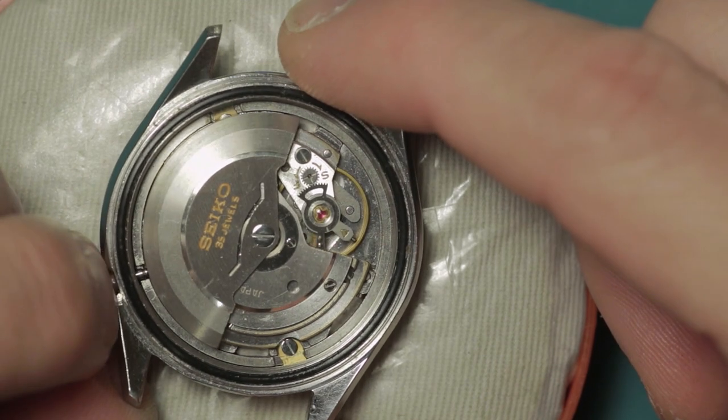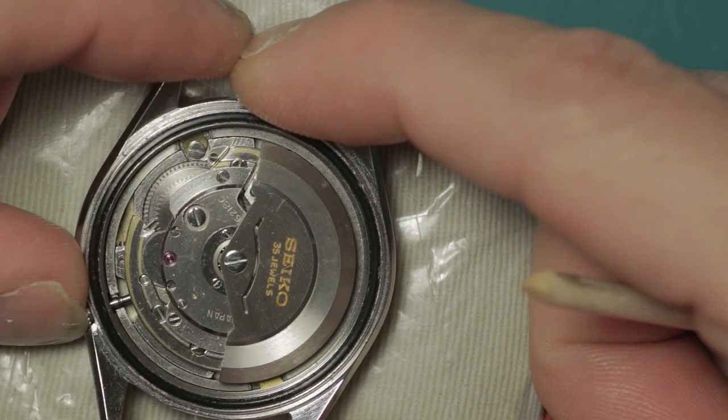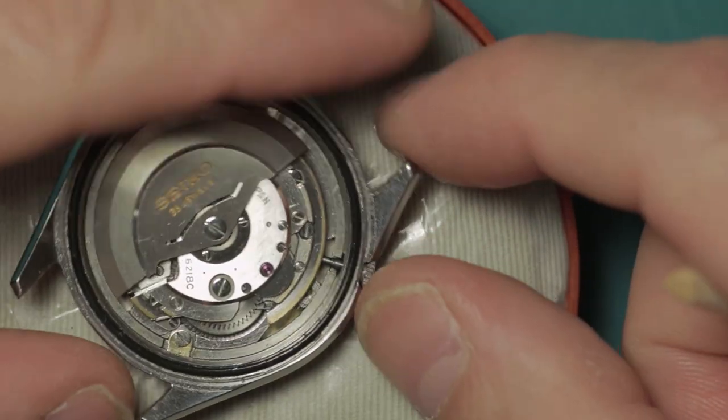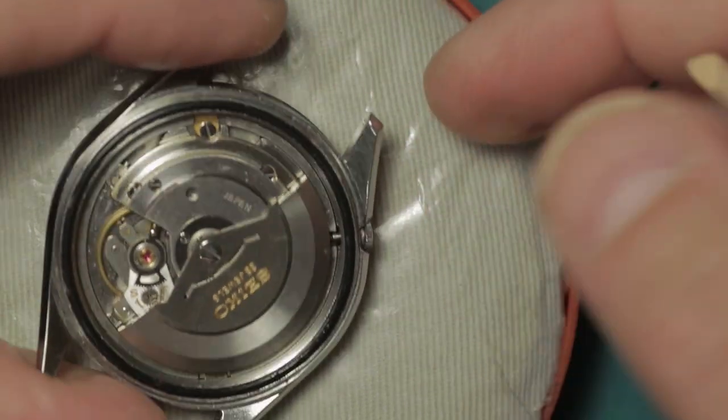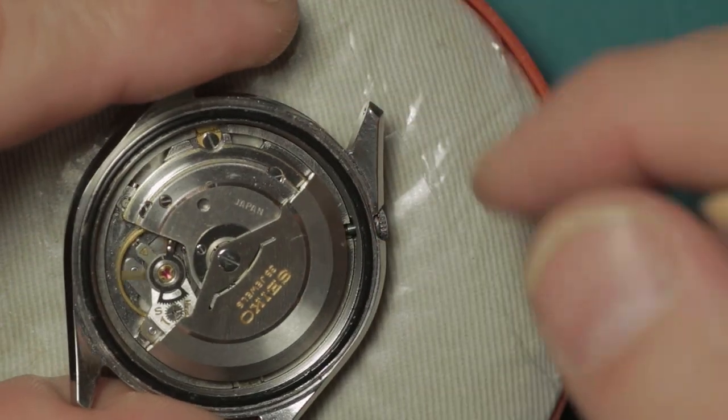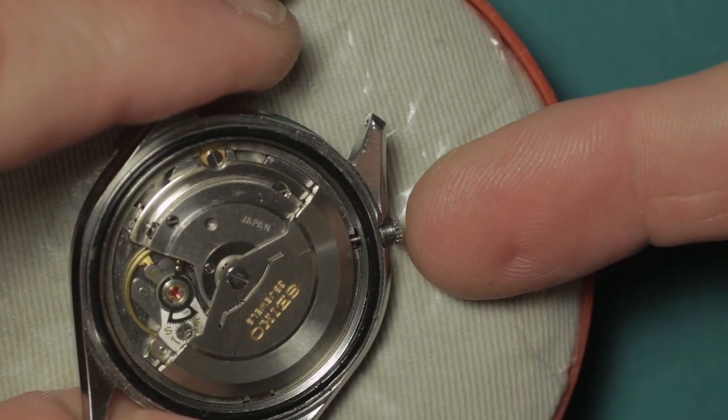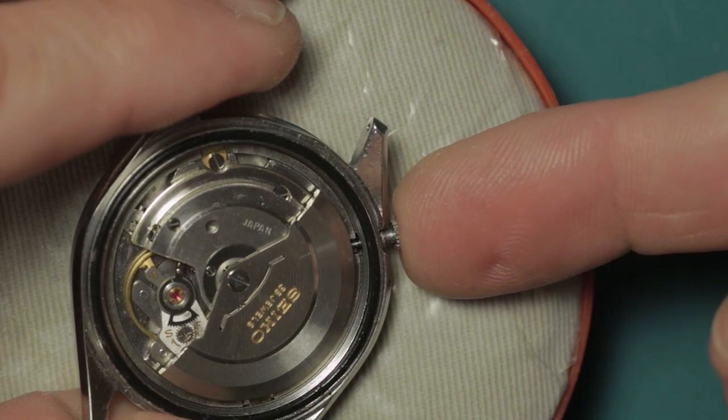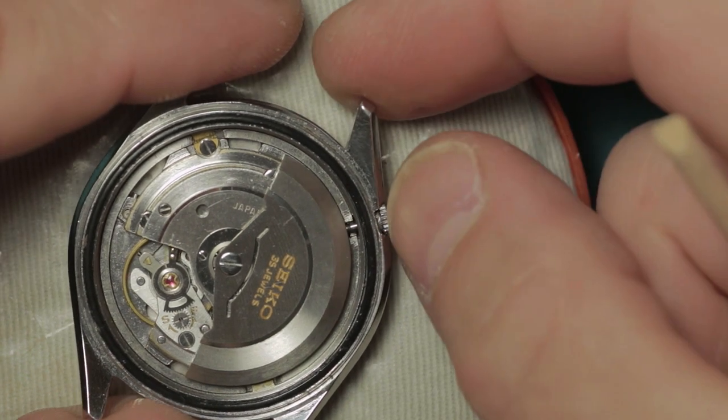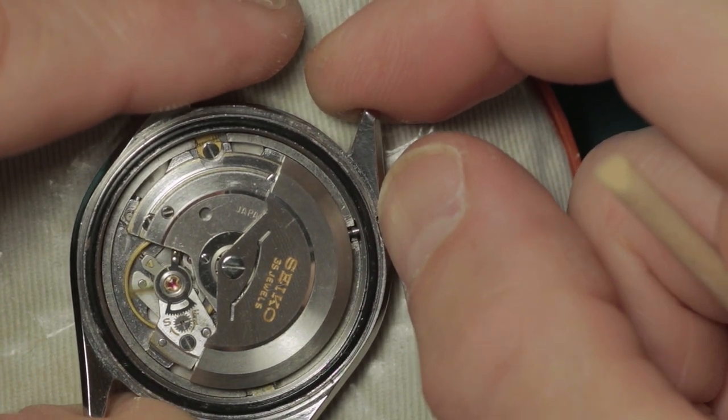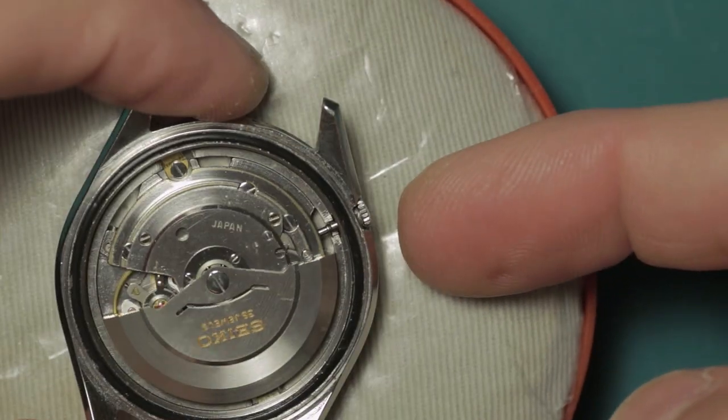We have here the tiniest crown I've ever seen on any watch. A lot of the Seiko 5s have very small crowns. You'll note also it has a hacking function as well - pull the crown out and it hacks and stops the seconds. There wasn't a great deal of power wound into that, but you can see it's swinging. Pull the crown out and it stops, push it back in and it will swing again.